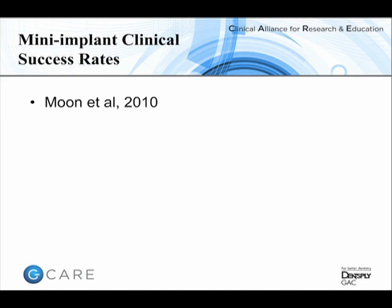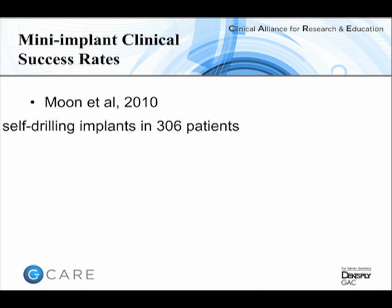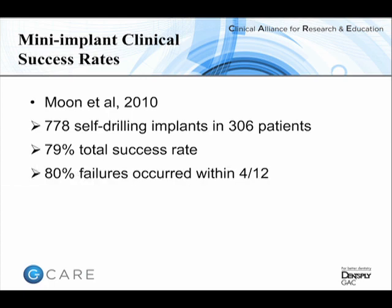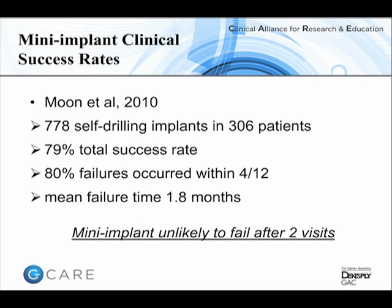One of the biggest case series, published in the Angle Orthodontist in 2010, showed 778 self-drilling mini-implants placed in consecutive patients, with an overall success rate of approximately 80%. Particularly interesting was that the vast majority of failures occurred within the first few months, with a mean time to failure under two months. This is good news because it means if a mini-implant is going to fail, it tends to fail early, and one can either replace it or re-examine the treatment goals.